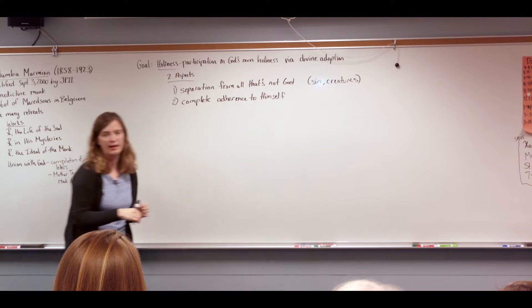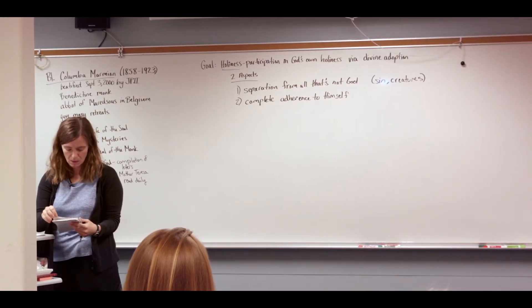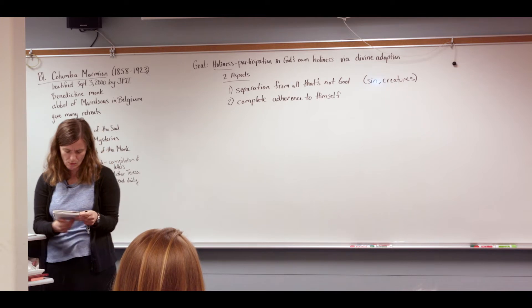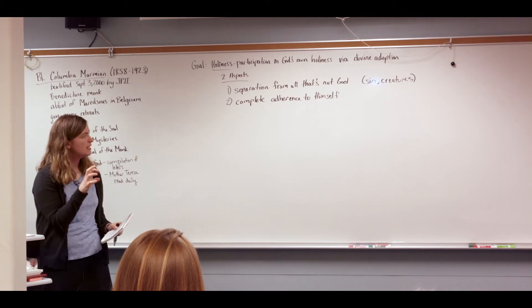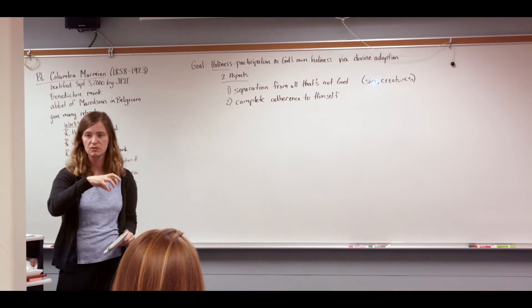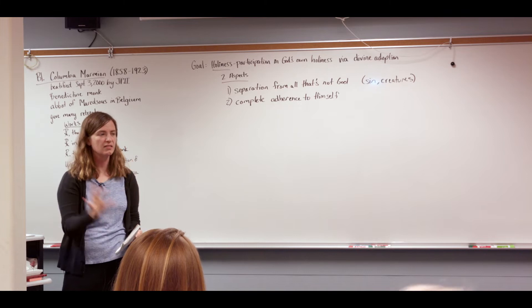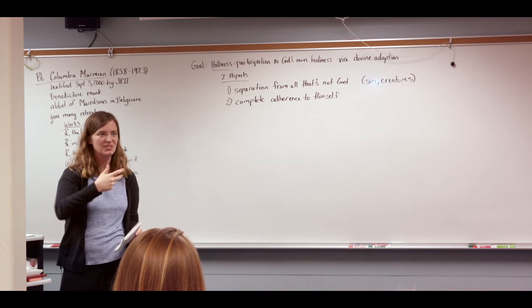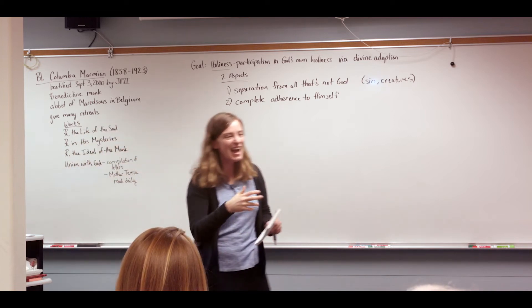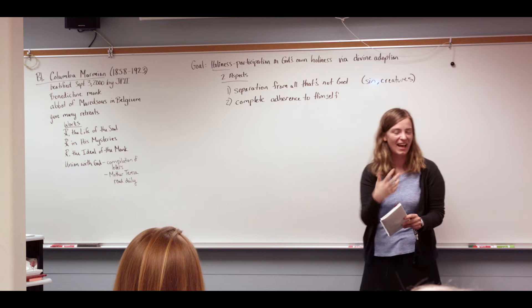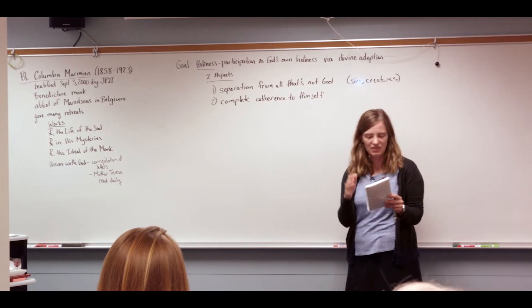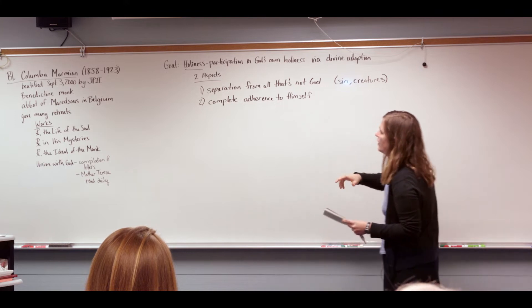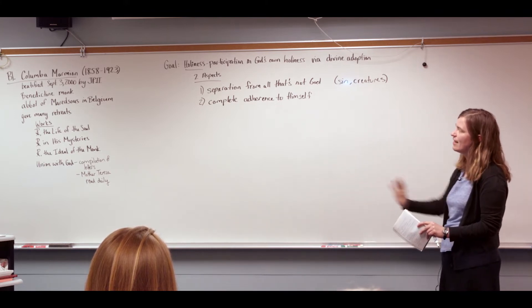The second aspect of God's holiness is complete adherence to himself. So, clinging to God. So, God in the Trinity makes a radical gift of himself to the Son. The Son makes a radical gift of himself to the Father. So much so that these radical gifts, you know, are fertile and create, not create, sorry, I'm a heretic. And the Holy Spirit comes forth as proceeding from this love of the Father and the Son. And so, we want to have this complete adherence to God. So, to separate ourselves from all that's not God and then cling to God.